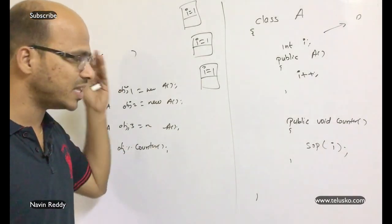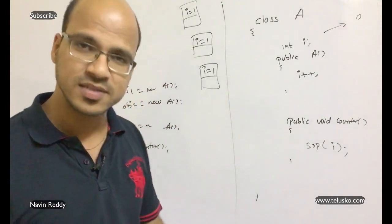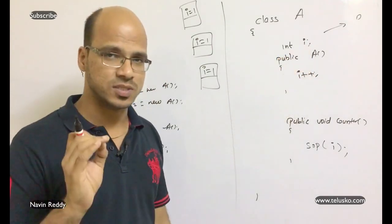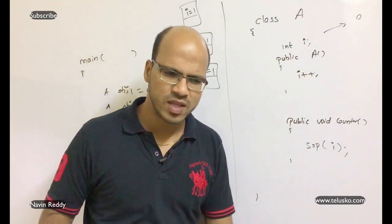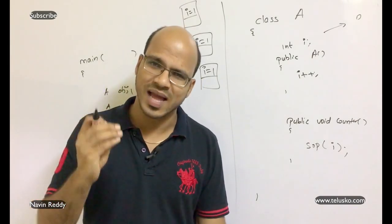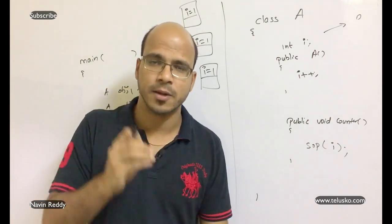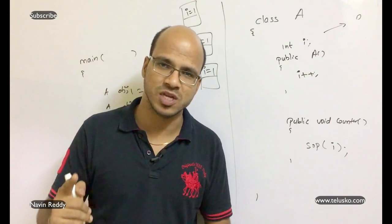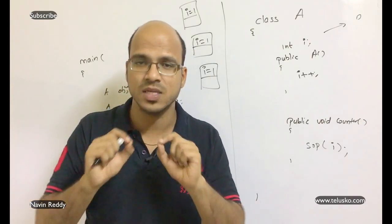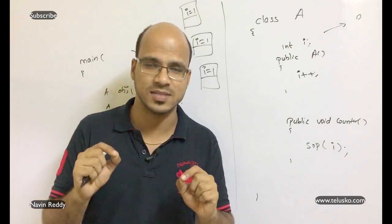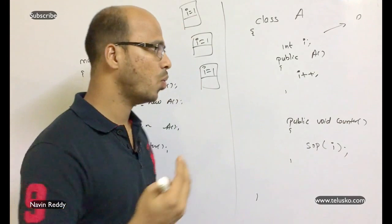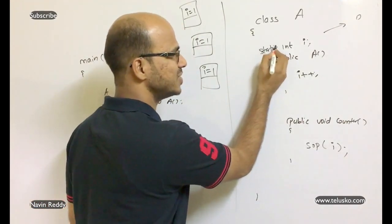So it's not counting correctly. What we want is: as the number of objects increases, the count should increase too. But the problem is this i is an instance variable. What if instead we take a class variable? A class variable is shared among all objects — if one object changes the value, it reflects on the second object, and so on. That variable doesn't depend on objects; it belongs to the class.